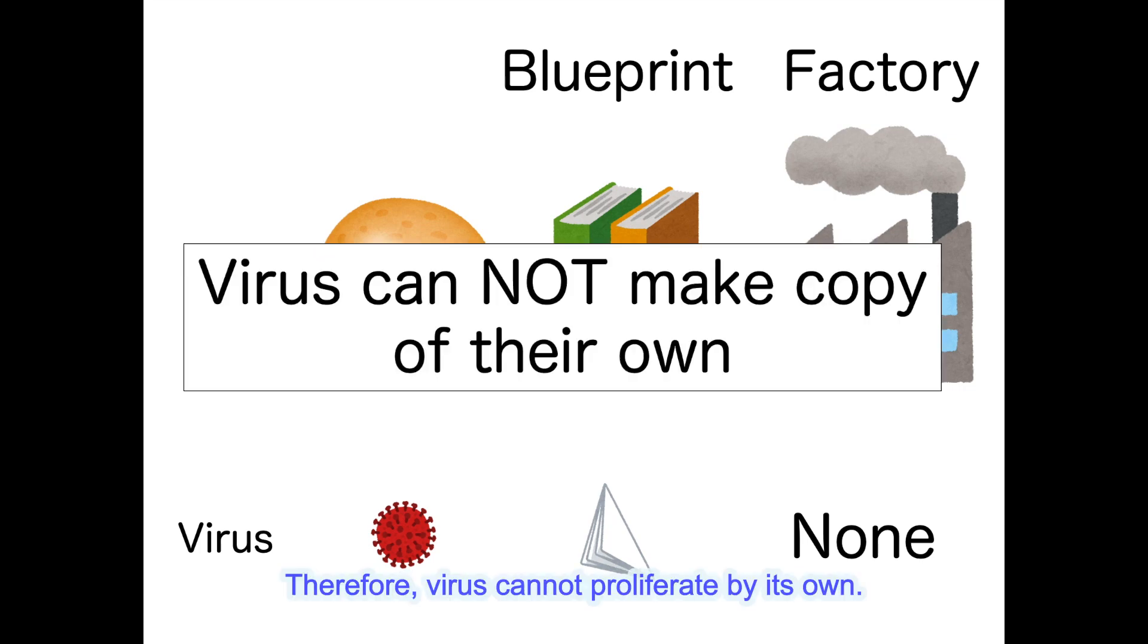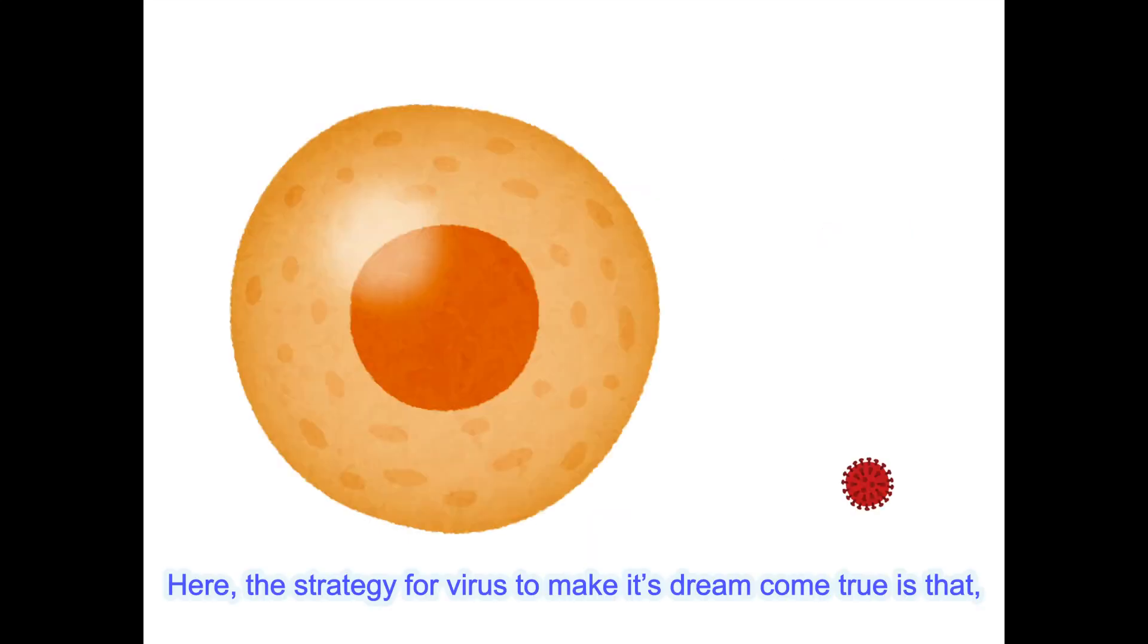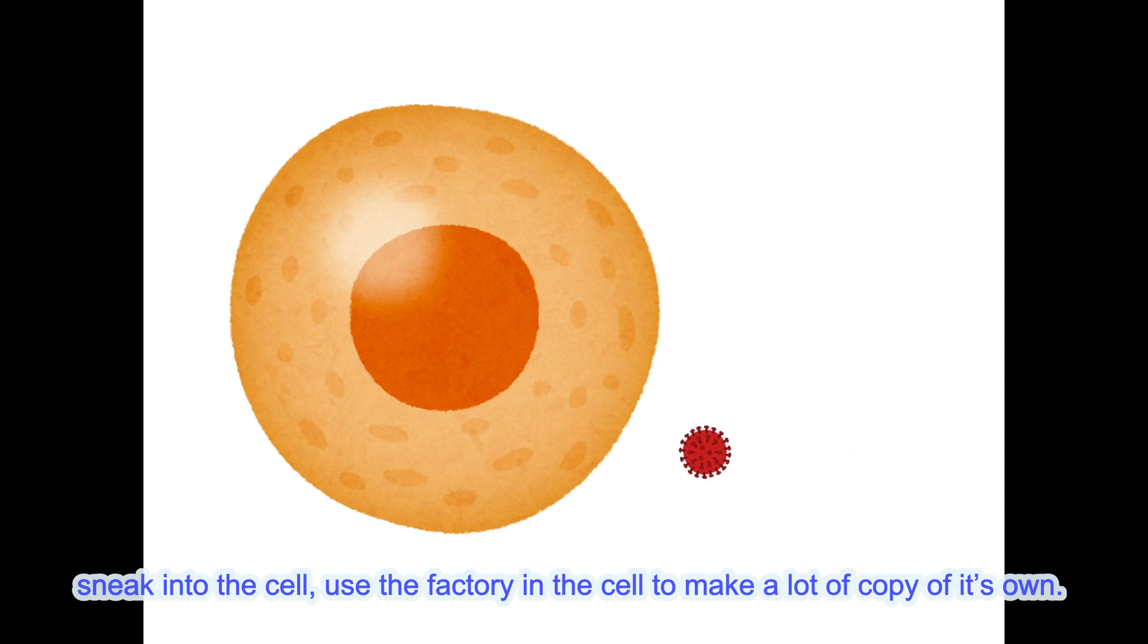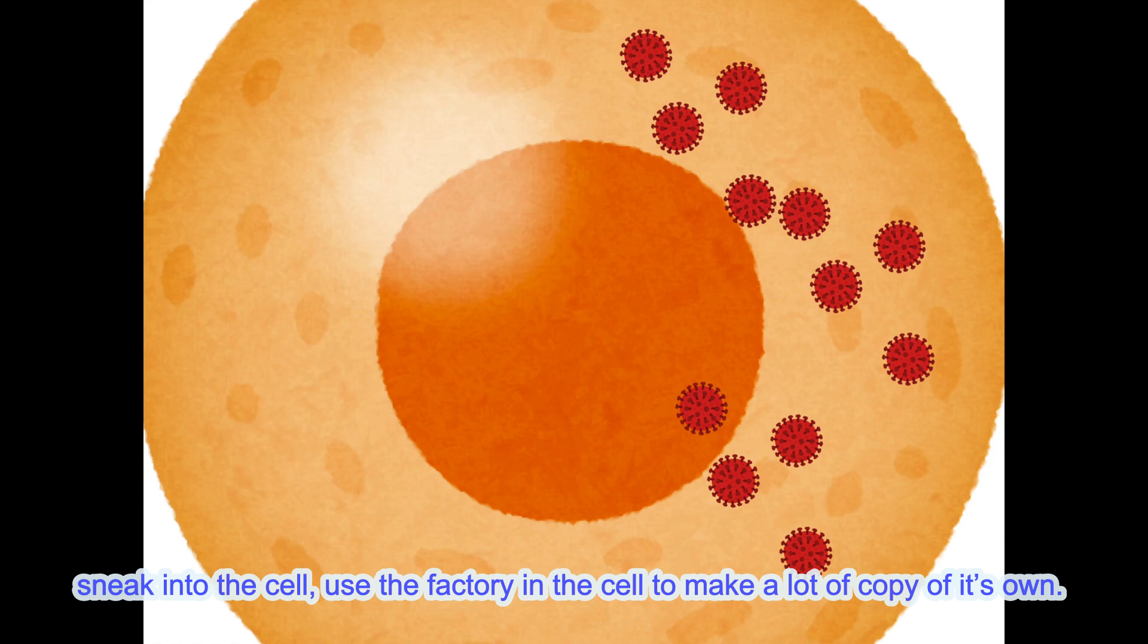Therefore, virus cannot proliferate by its own. Still, virus didn't want to give up that big dream. Here, the strategy for virus to make its dream come true is to sneak into the cell, use the factory in the cell to make a lot of copies of its own.